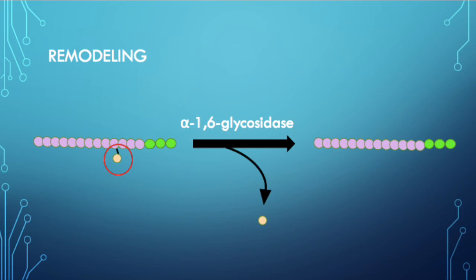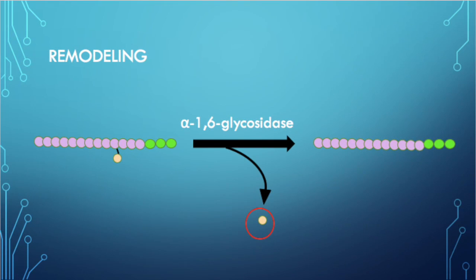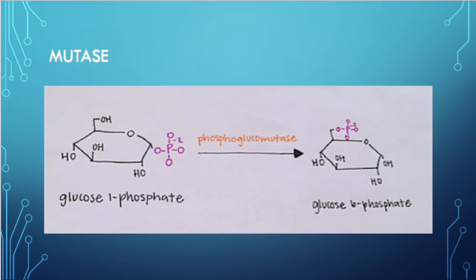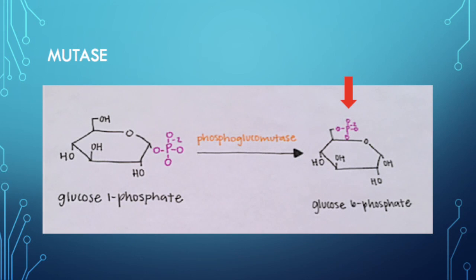Now that we have a single glucose molecule attached by an alpha-1,6 glycosidic bond, we can use alpha-1,6 glucosidase to cleave this glucose molecule, giving us one more free glucose. Once cleaved, we are left with a linear polymer of the glycogen chain composed of only alpha-1,4 glycosidic bonds, so glycogen phosphorylase can finish breaking apart the chain.